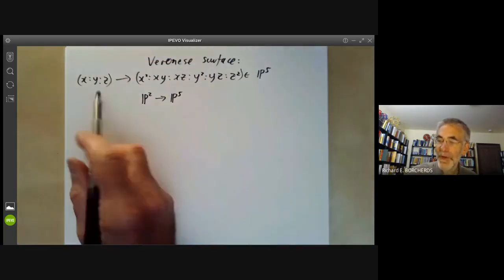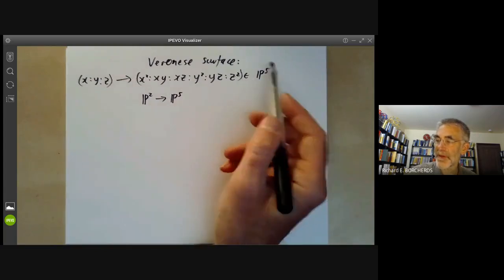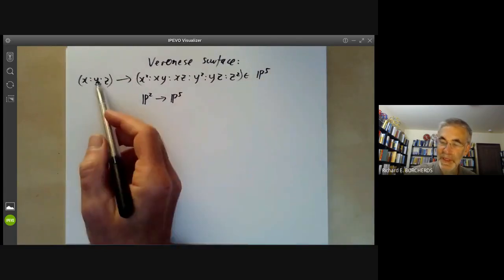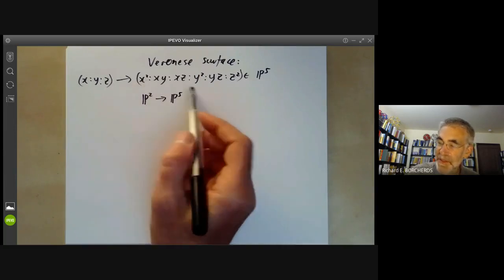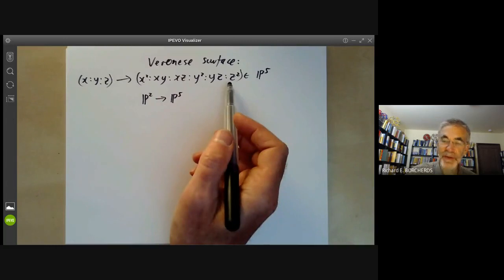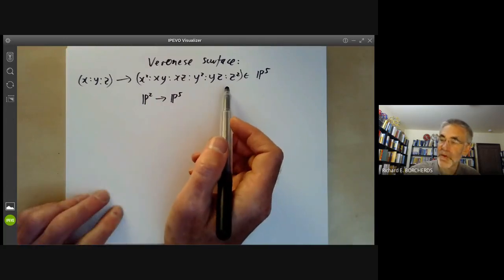Obviously this map isn't onto because P5 is dimension 5 and this only is dimension 2. So we would like to describe this subset of P5 by giving explicit equations for it.